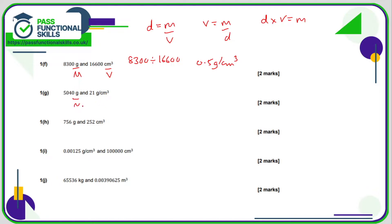Here we've got a mass and a density, so the volume is the mass divided by the density. That's 5040 divided by 21, and that comes to a total of 240 cubic centimetres.